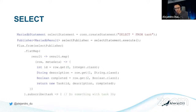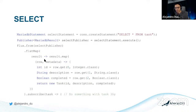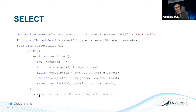For a SELECT, you create a Statement, optionally bind parameters (e.g., if there's a WHERE id = something), execute the statement to get a Publisher, then create a Flux from that Publisher using Flux.from(). Then you can subscribe. In the subscriber, you get the Result, map each row to a new Java object (a task in this example) by getting column values, and start receiving those tasks as the result set comes in — all happening in the future while you can do other things.